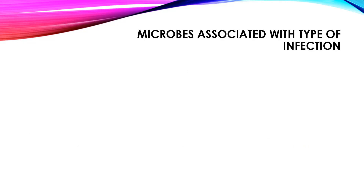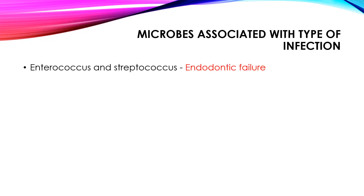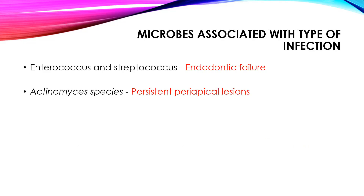In a particular type of infection, you will be able to isolate predominantly certain microorganisms. In cases of endodontic failure, you will be able to see Enterococci and Streptococci species. In persistent periapical lesions, one of the organisms responsible is Actinomyces.